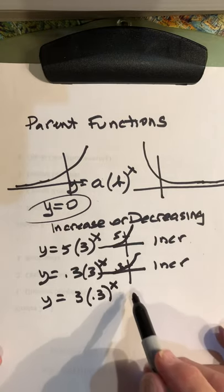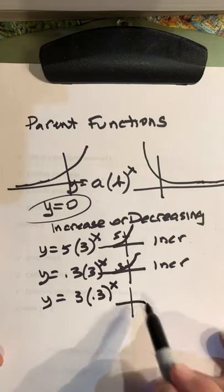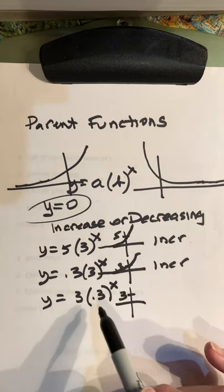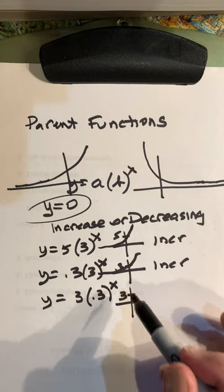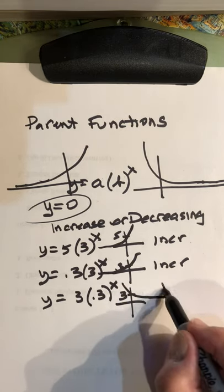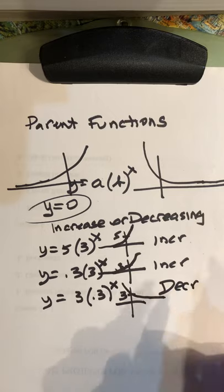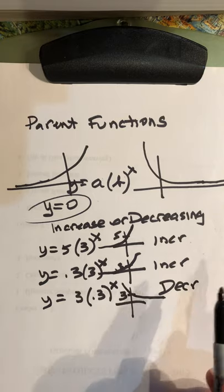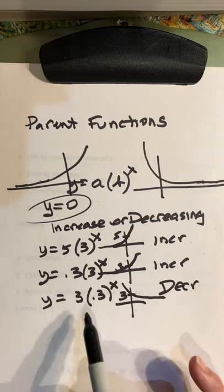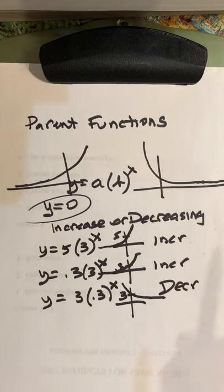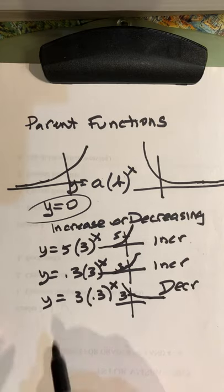What about y equals 3 times 0.3 to the x? Now I've interchanged the a and the b. Well, now this one has a y-intercept of 3. But this is a decay scenario. This is going to go like this. So that's going to be decreasing. And when we say increasing or decreasing, we're talking about as you move from left to right on the graph. In this case, it's like slope. As you move from left to right, is it going up? That's a positive slope. If it's going down, you have a negative slope.